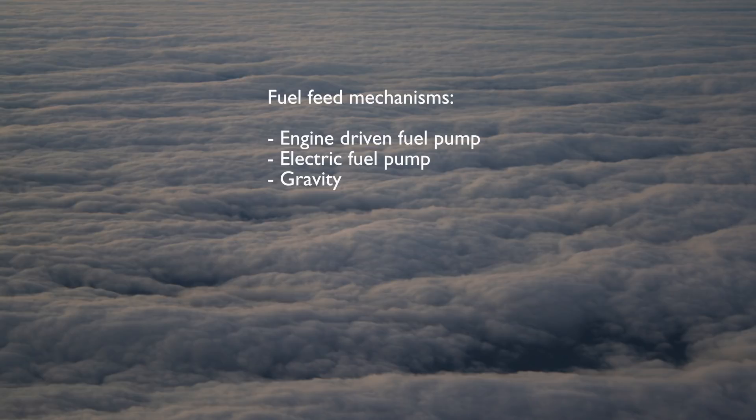On a high wing airplane, fuel can be fed to the engine using gravity, whereas it must be pumped up to the engine on a low wing airplane.